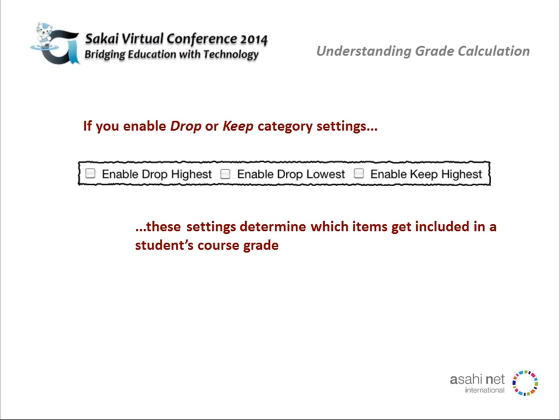The other thing to keep in mind is if you do use the drop or keep category settings, even though for any one particular item you'll see an option to enable including it in the course calculation, you're still going to be dropping particular items for specific students. This isn't something that gets applied to everyone in the same way, since it's all based on a particular score in a category. Things are in flux as you're adding and scoring items — as you keep scoring, it's going to keep changing what's capped and what's dropped.